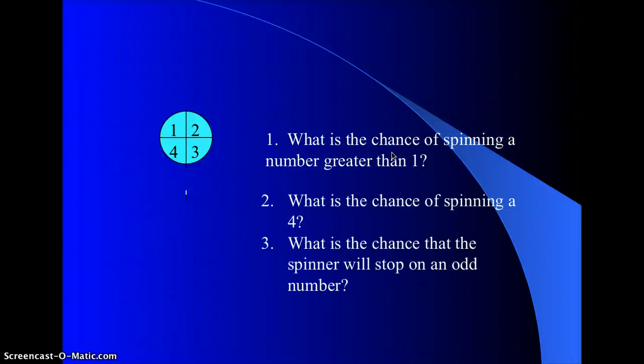Number two, what is the chance of spinning a four? And three, what is the chance that the spinner will stop on an odd number? Pause it. The chance of spinning a four would be one out of four, so a 25 percent chance. And the chance of spinning an odd number would be one and three, which would be two out of four, so a half probability of occurring half the time. So the chance is 50 percent.